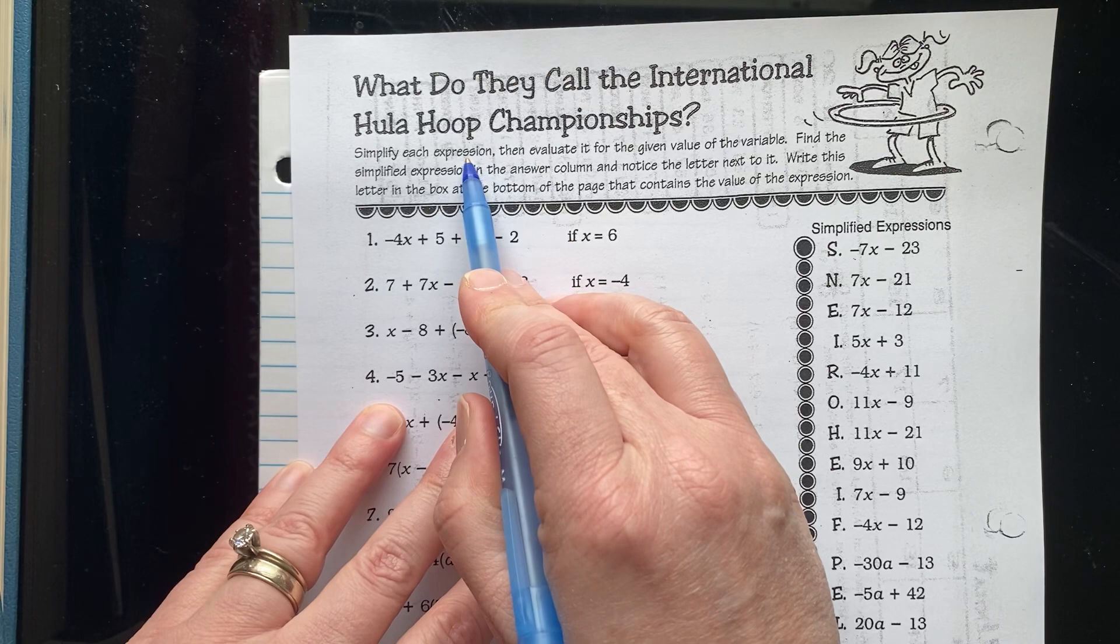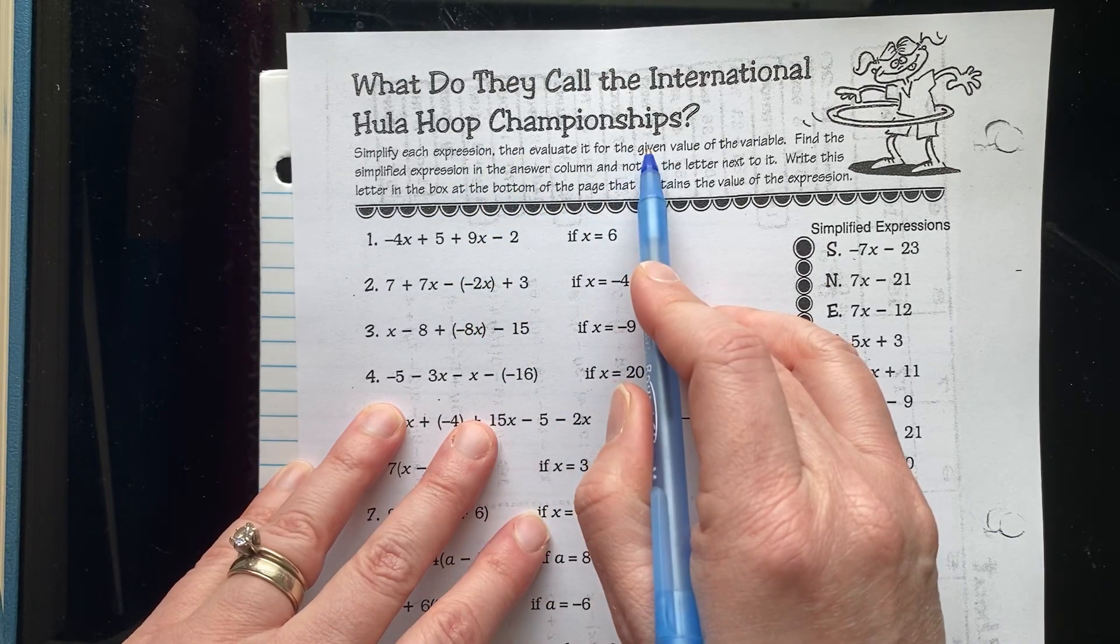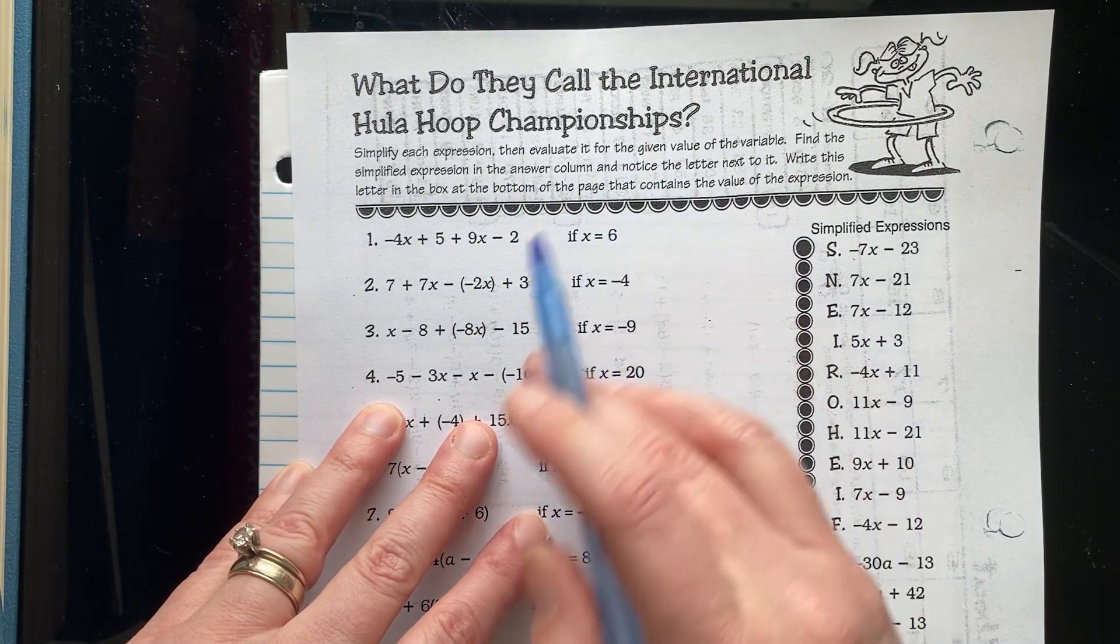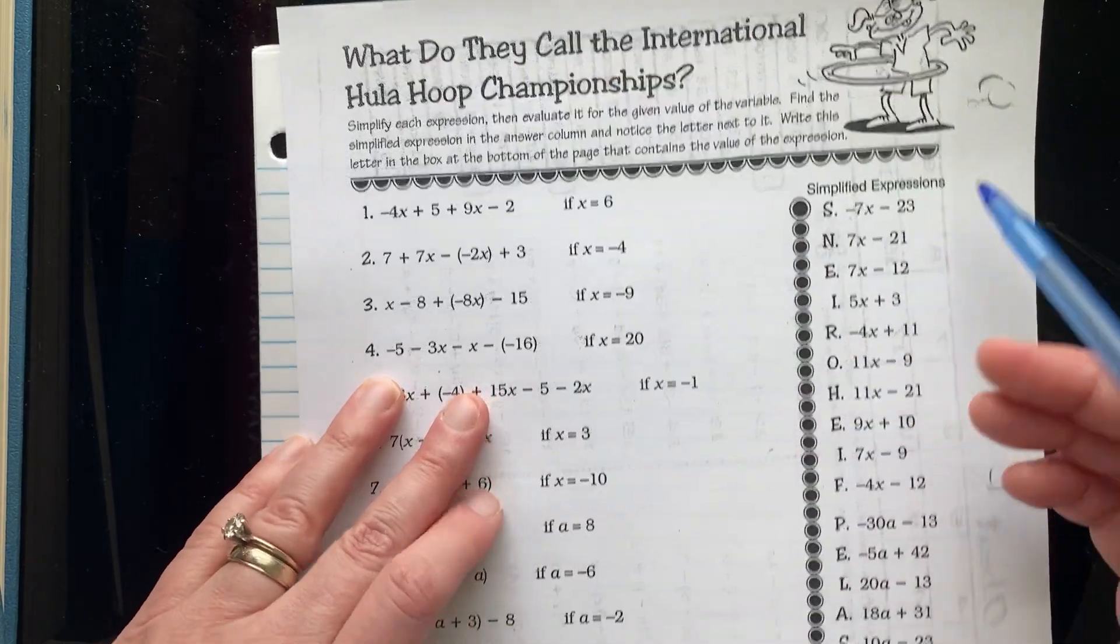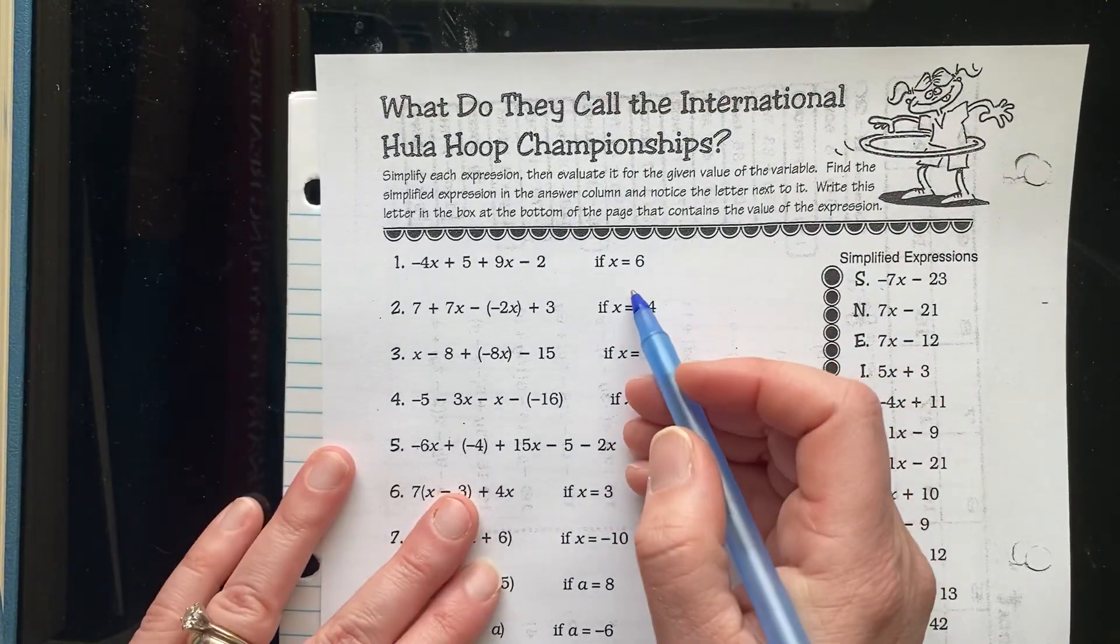First we're going to simplify each expression, then evaluate it for the given value of the variable. We're going to find the simplified expression and write in the value when we substitute the variable in.